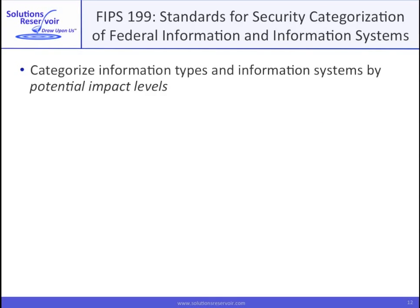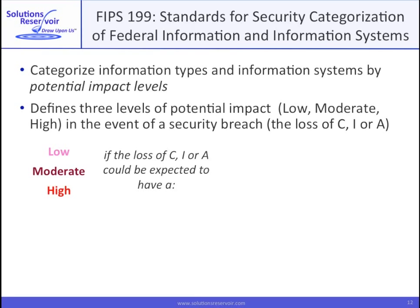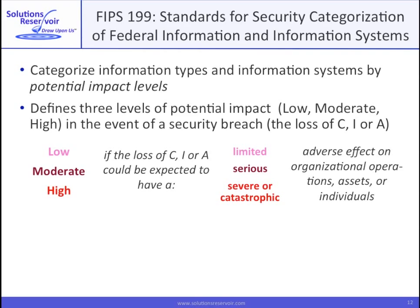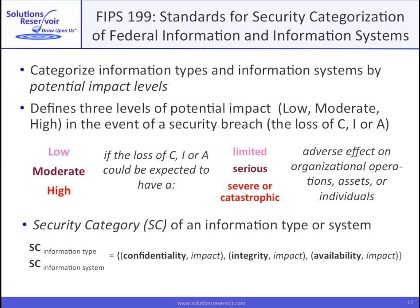FIPS 199 provides guidance to categorize information types and information systems according to potential impact levels. It calls out three levels of impact — low, moderate, or high — as a result of a security breach, i.e., the loss of confidentiality, integrity, or availability. Impacts are low, moderate, or high if the loss of C, I, or A would have limited, serious, or severe consequences on operations, assets, or individuals. Security categories are applicable to both information types and information systems, and there's a format to express this. Values of these impacts will be low, moderate, or high, or possibly not applicable.